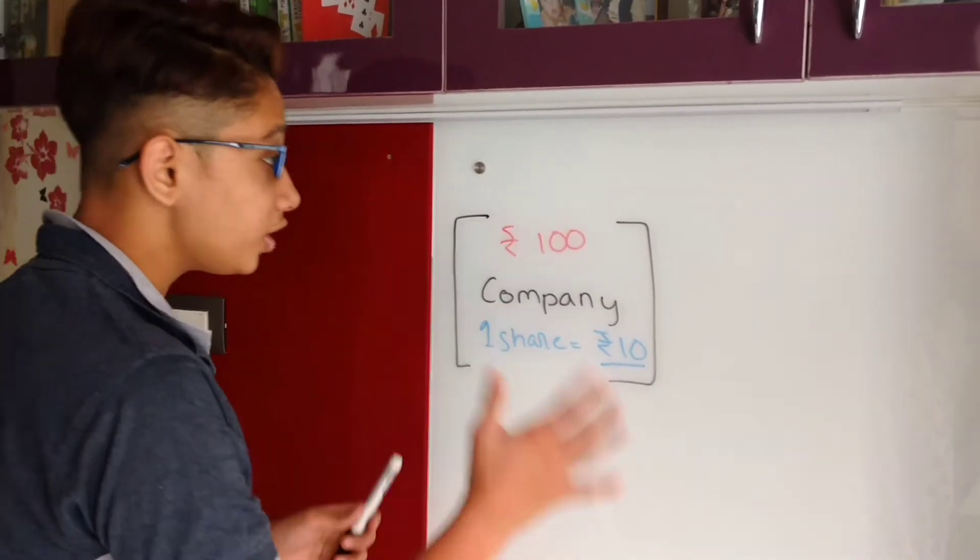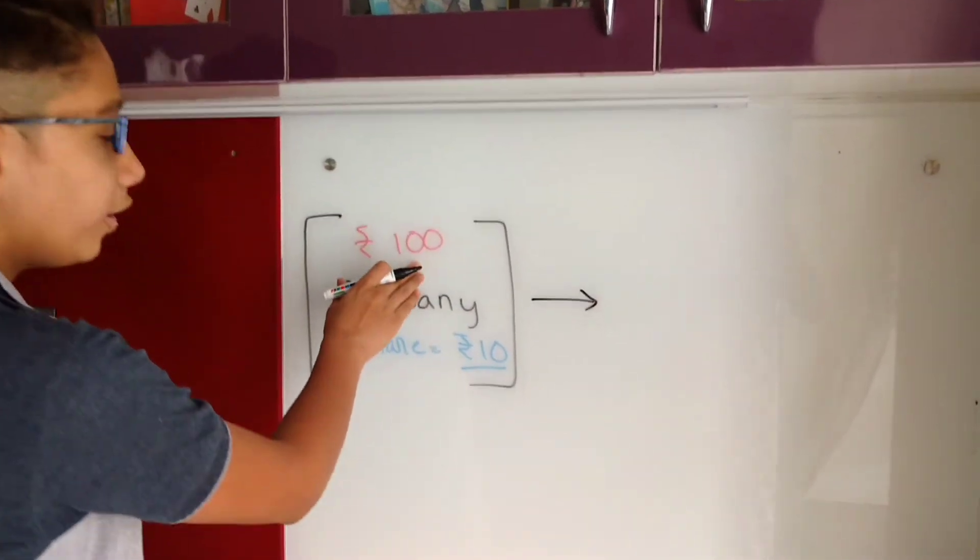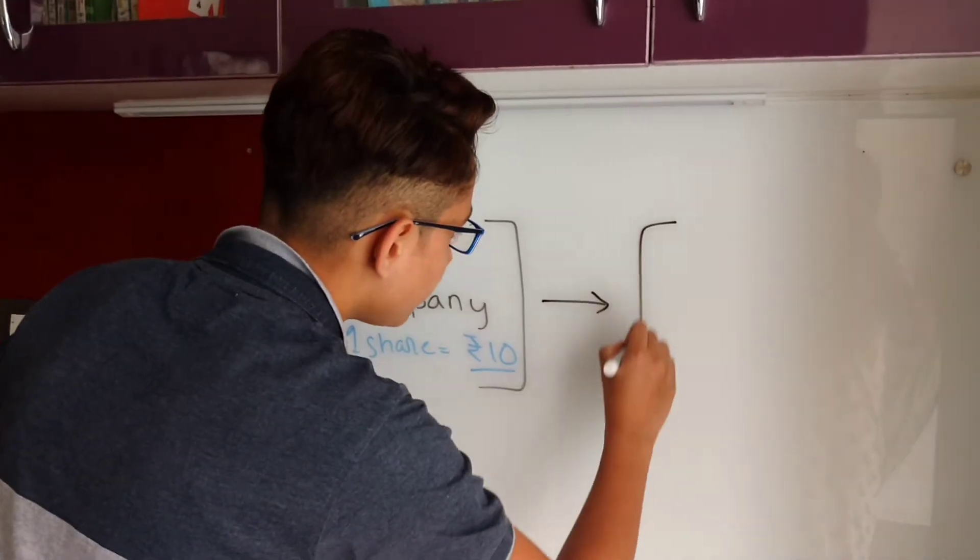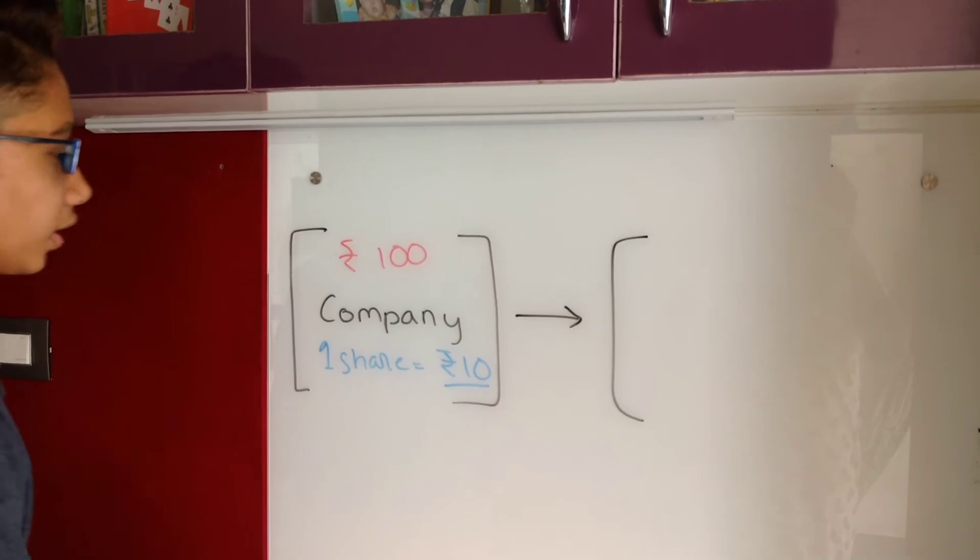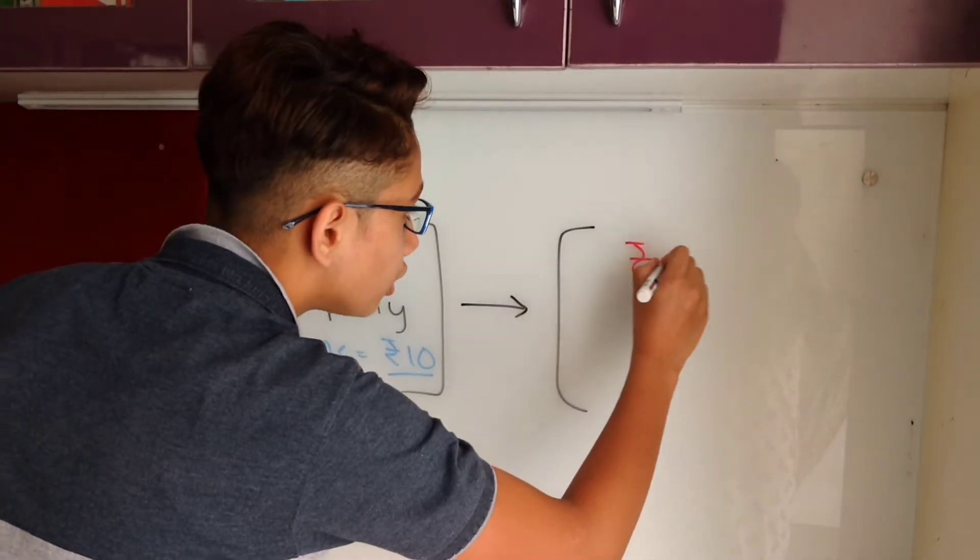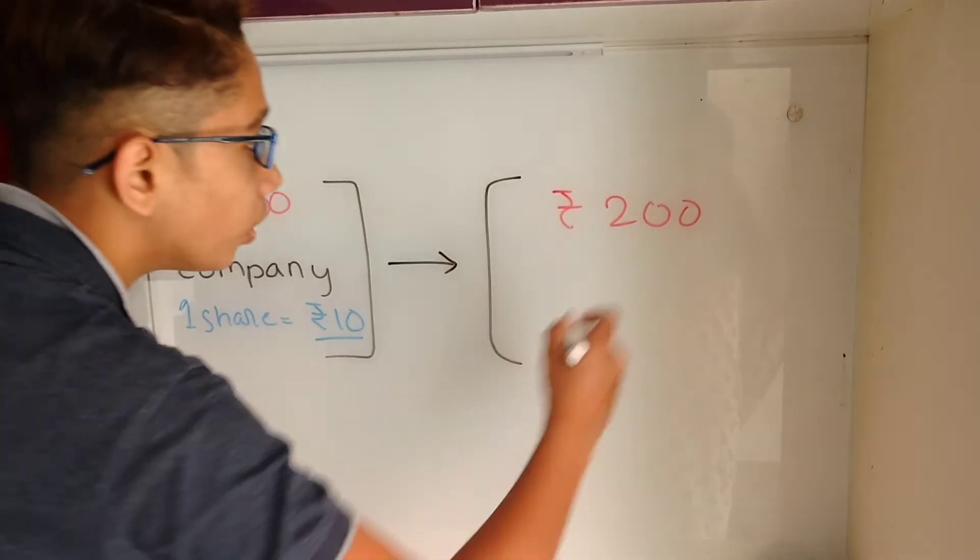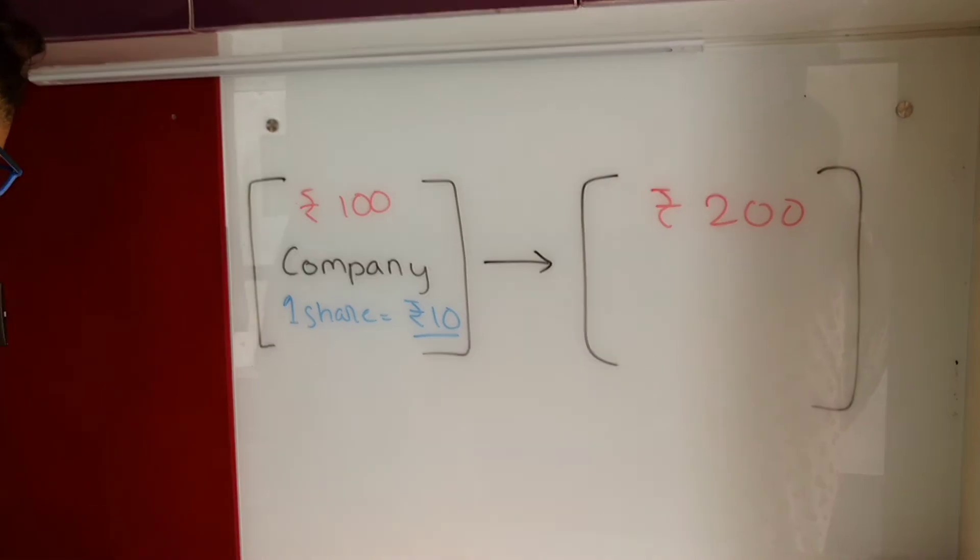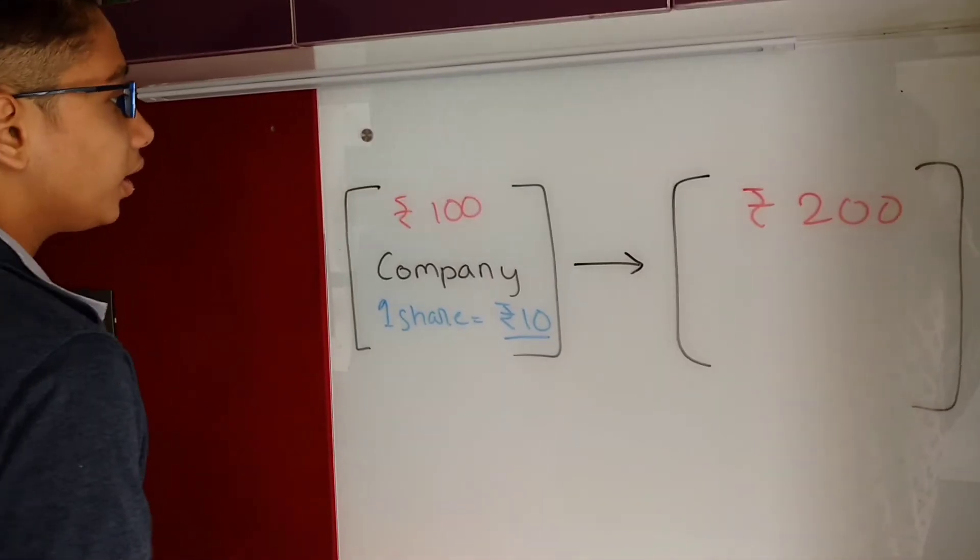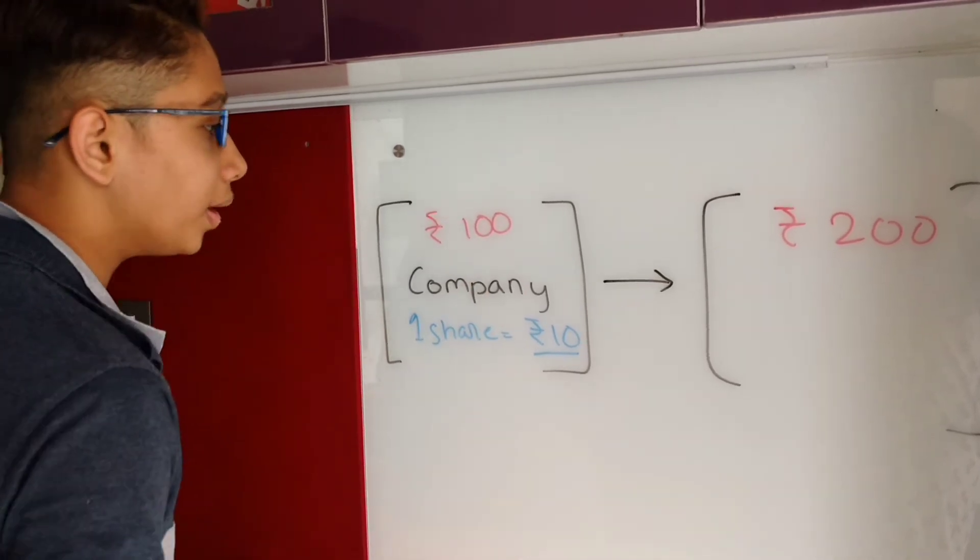The first case scenario is that the company will do really well with that 100 rupees. So let's say that your company does really well and now the company's worth has increased to 200 rupees. Since the company's worth has increased, the company's price of one share will also have increased. As you can see, it has doubled its worth, so that means one share will also double its price.